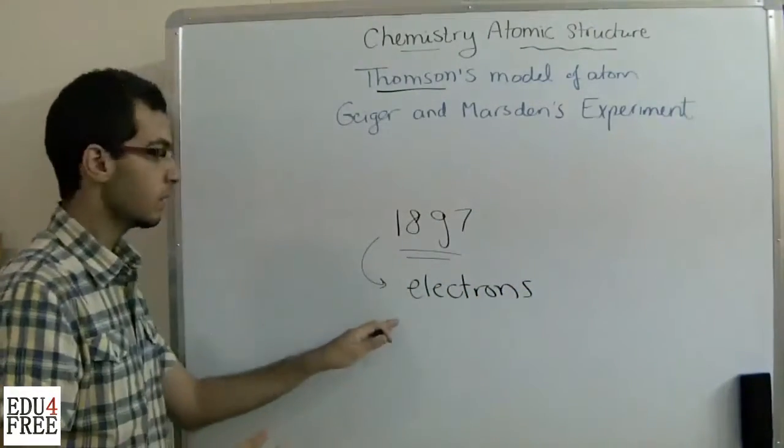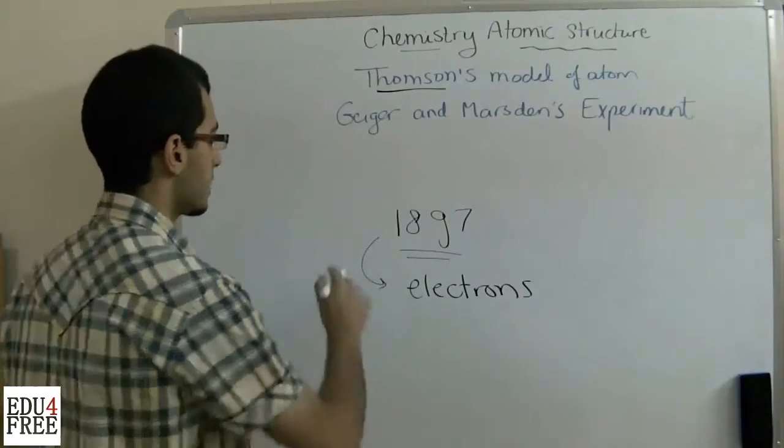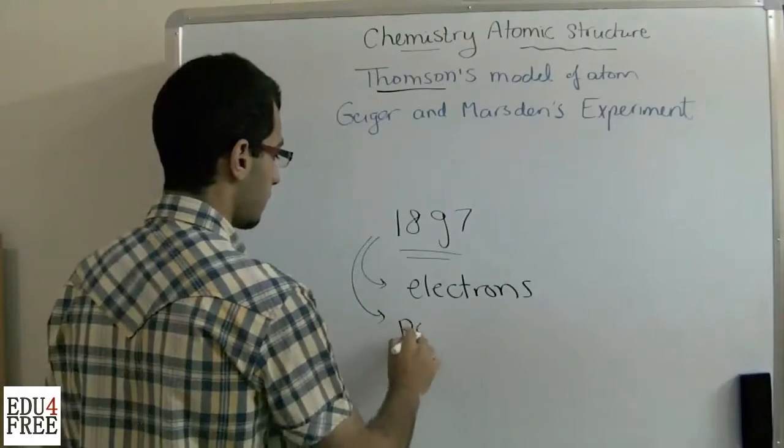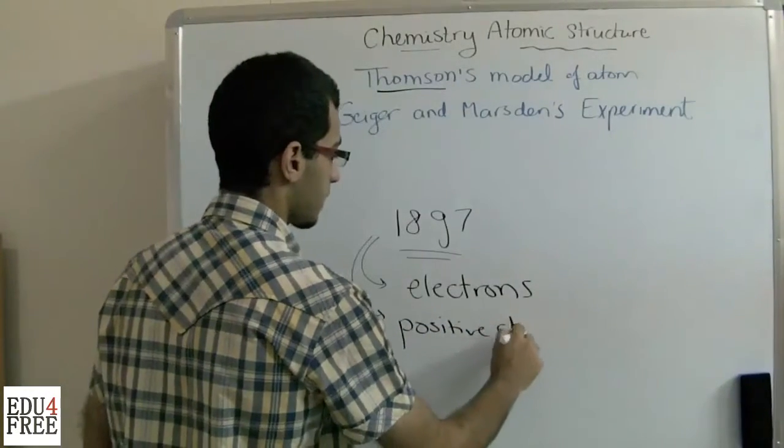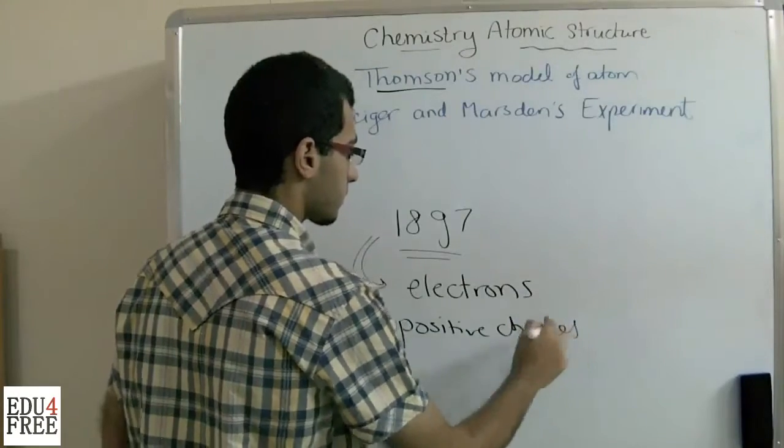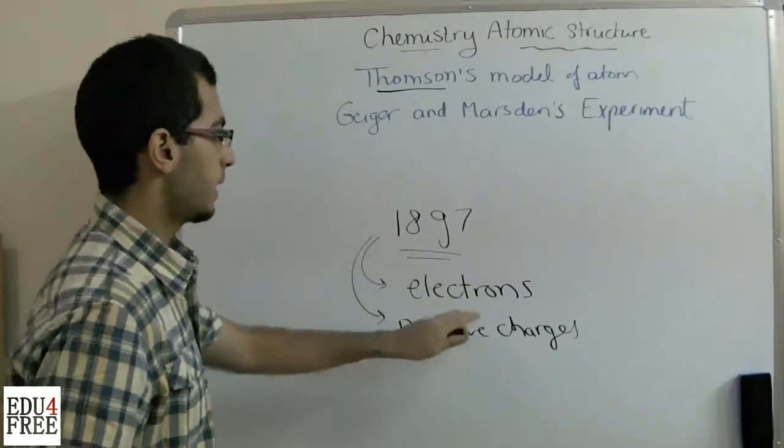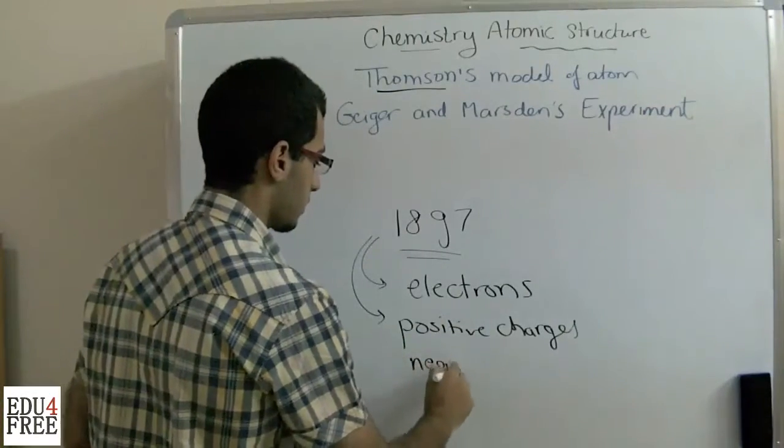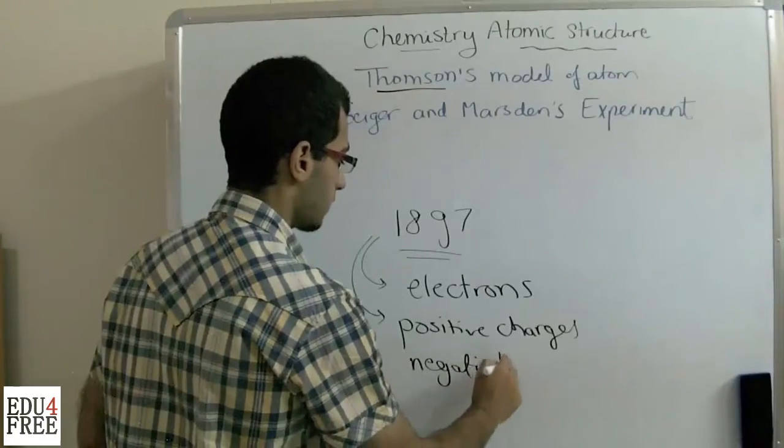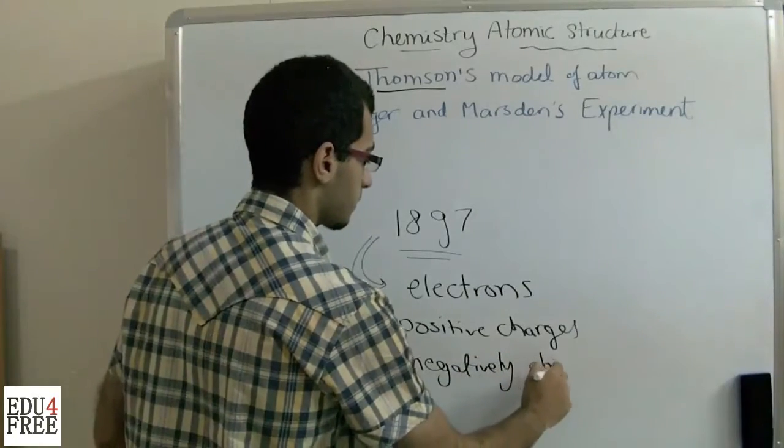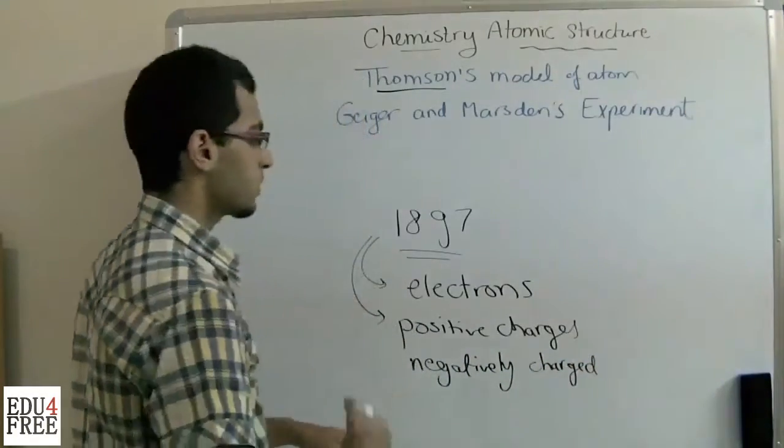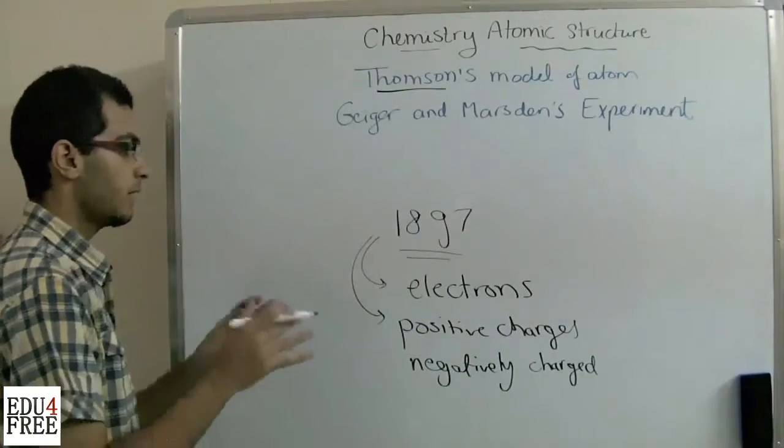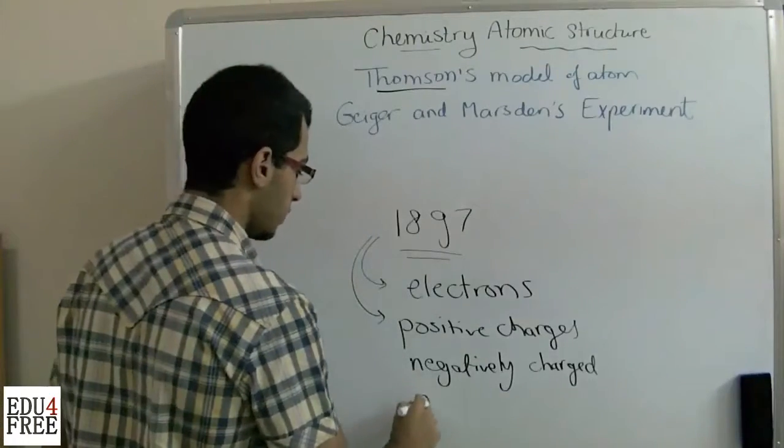He defined the atom as a mass of uniform positive charges surrounded by the electrons, which are negatively charged, which finally leads to the presence of the atom in the neutral state.